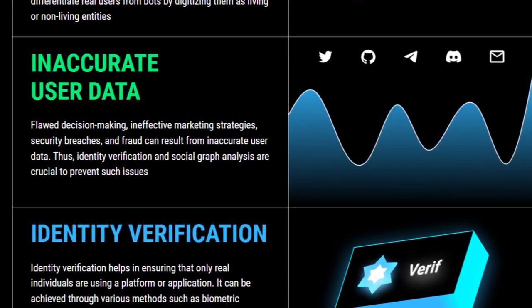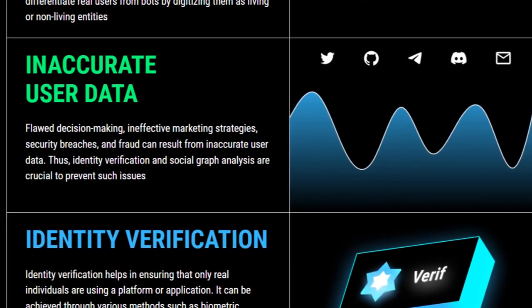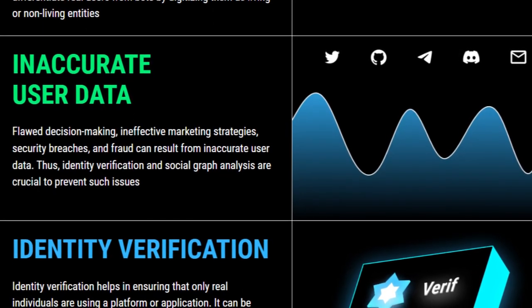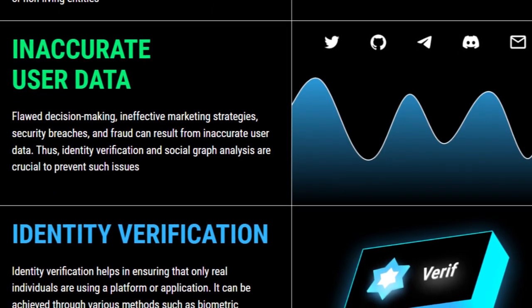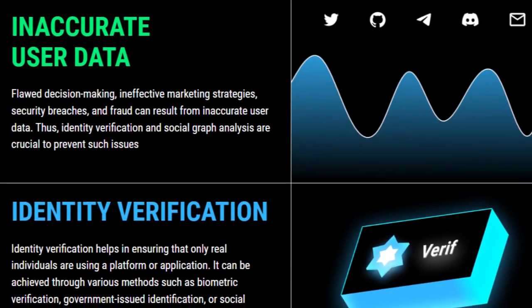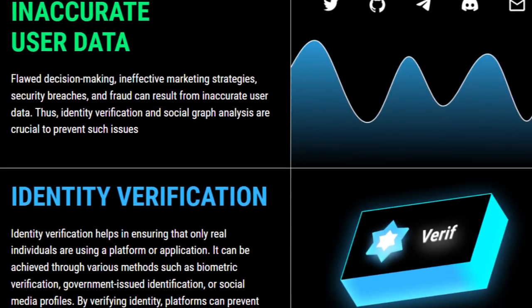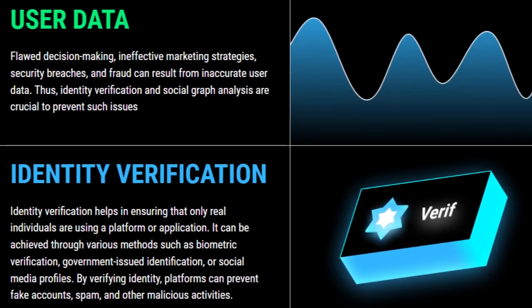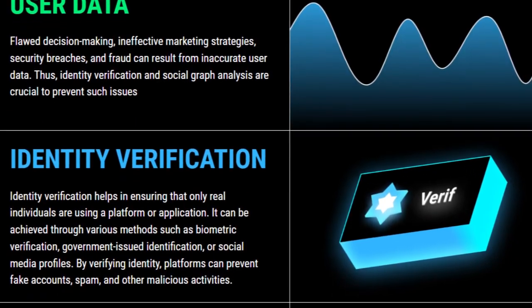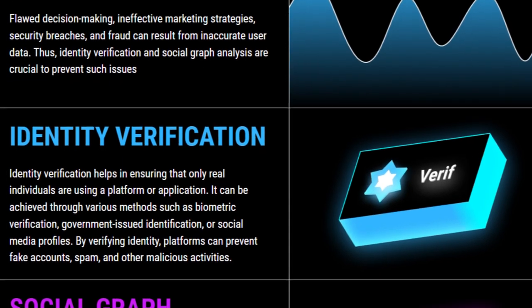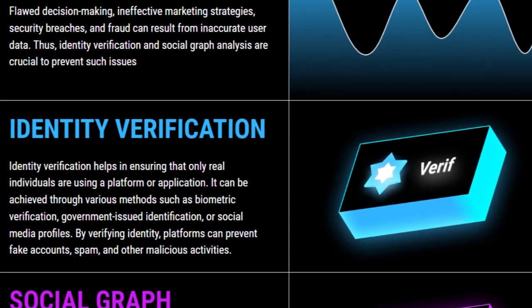Thus, identity verification and social graph analysis are crucial to prevent such issues. Identity verification helps ensure that only real individuals are using a platform or application. It can be achieved through various methods such as biometric verification, government-issued identification, or social media profiles. By verifying identity, platforms can prevent fake accounts, spam, and other malicious activities.